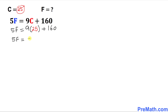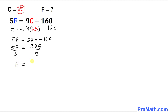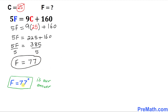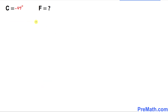Simplifying: 9 times 25 is 225, plus 160 gives us 385. So 5F equals 385. Dividing both sides by 5, F turns out to be 77. Thus F equals 77 degrees is our complete answer.